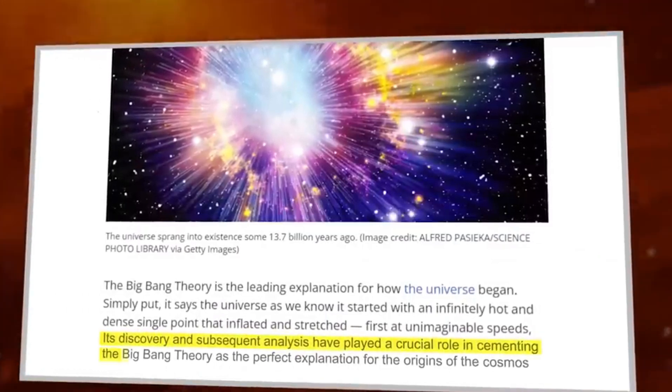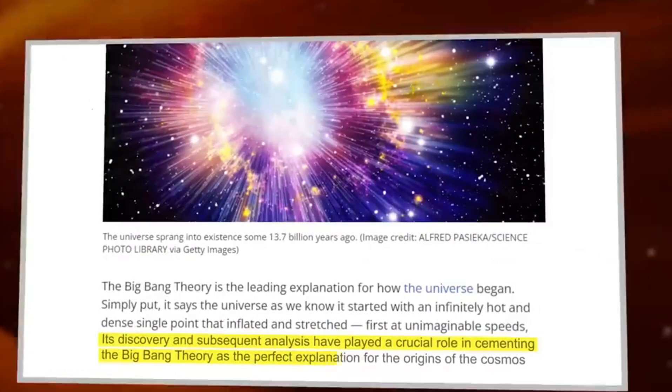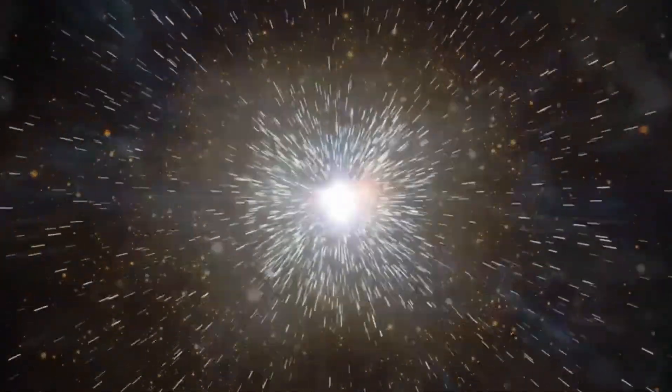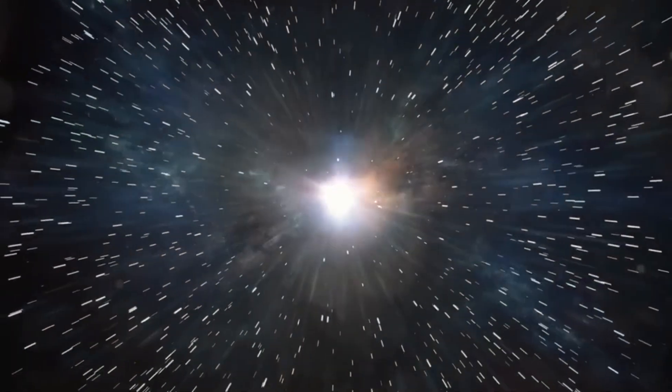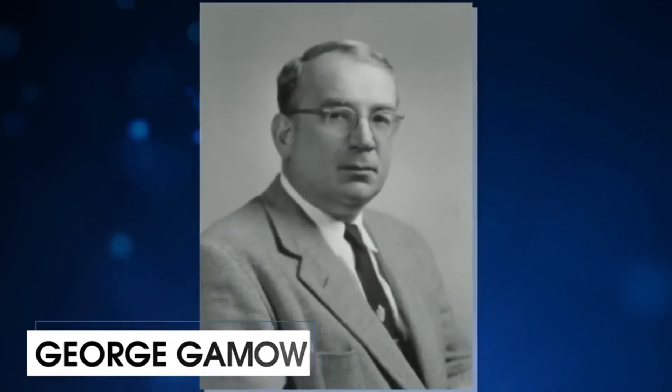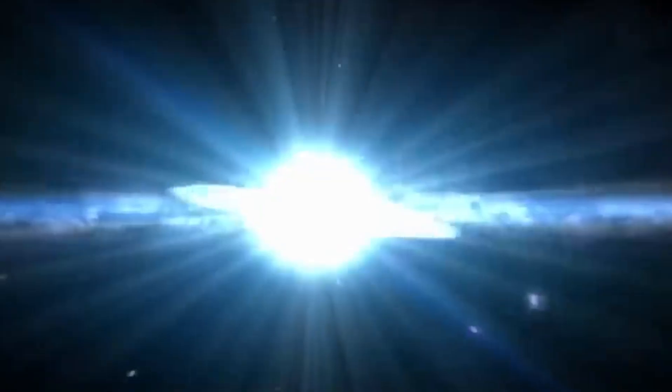The most important thing is that spectra give very precise distances to these objects, said Leja. The distance and the identity of these objects are correlated. If we know the distance, we can pin down the identity, and vice versa. So a spectrum will pretty immediately tell us if our hypotheses are correct or not.